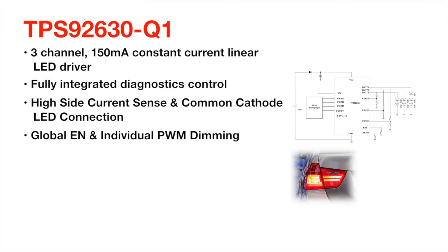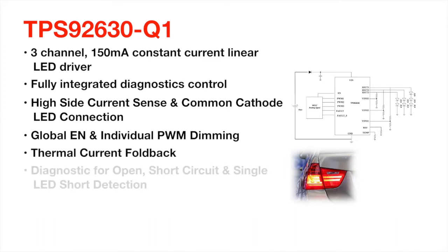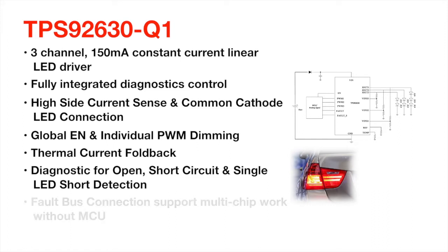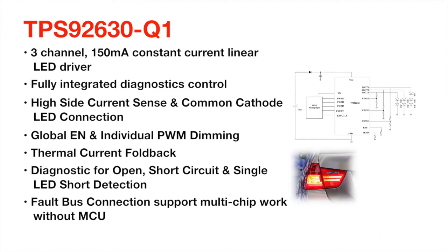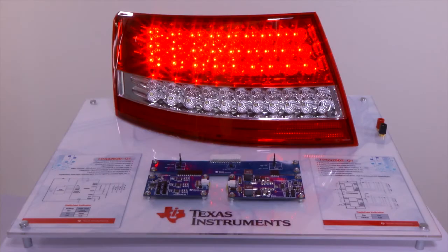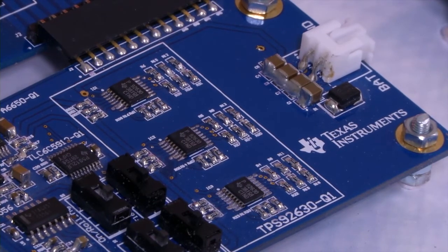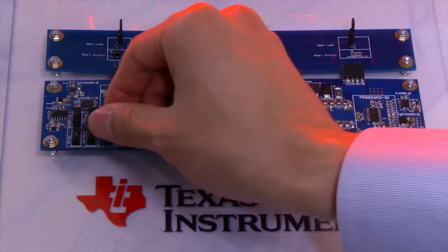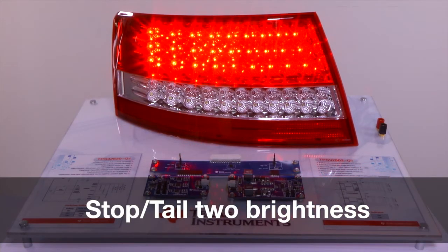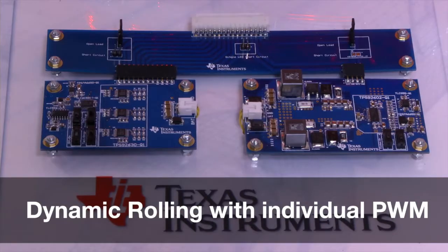The TPS92630-Q1 also implements thermal management and diagnostics for open, short, and single-LED short detection. The flexible fault pin can achieve bus connection that supports multiple parts working together without an additional MCU. Here you can see a total of 9 LED strings with 3 LEDs each for stop and tail light functions. We use a total of 3 TPS92630-Q1 devices to connect the 9 LED strings, and everything is connected on a single fault bus to realize one fail, all fail.